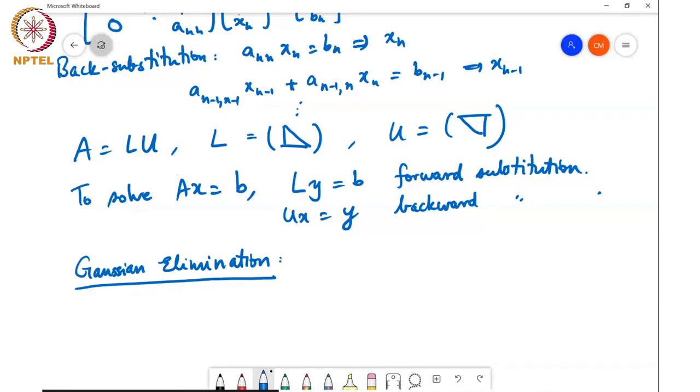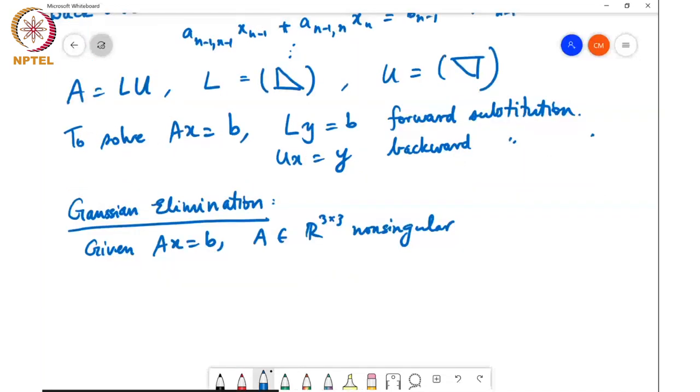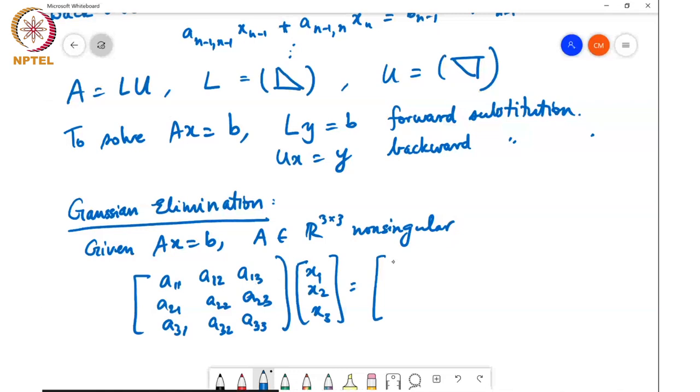So suppose just as an example, we are given A X equals B, A is some matrix of size 3 by 3 and it's non-singular. And then basically the system of equations I'm trying to solve will look like A11, A12, A13, A21, A22, A23, A31, A32, A33 times X1, X2, X3 is equal to B1, B2, B3.